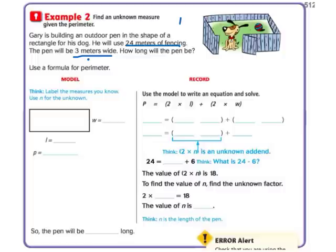So let's take this information that we just got and put it onto our picture. We know our perimeter is 24 meters. And we know our width is 3 meters. So we've got to figure out our length.